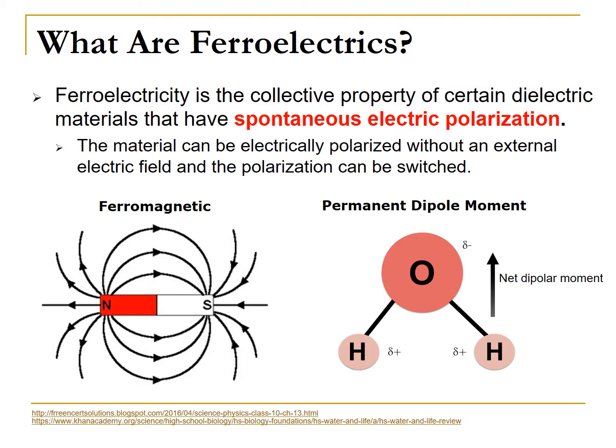A good example of a material whose molecules have dipole moments but is not ferroelectric is water. In a water molecule, since the oxygen atom is slightly negative and the hydrogen atoms are slightly positive, this produces a net molecular dipole moment. However, the molecular dipole moments of every molecule in water don't spontaneously align, so water is not polarized.